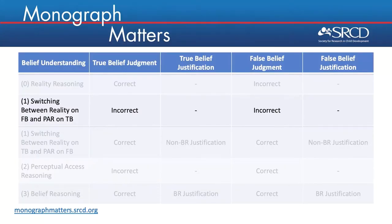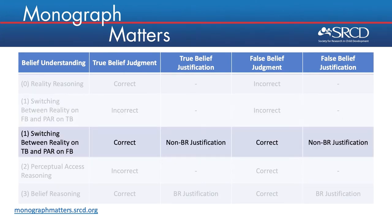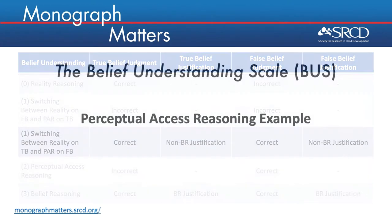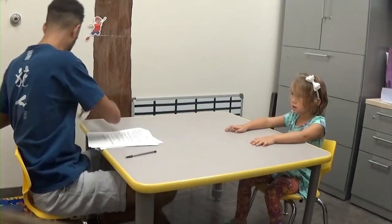As you just saw, the child gave an incorrect answer on both the true belief judgment question and the false belief judgment question. A child can also be categorized in this strategy when giving a correct answer on both judgment questions but failing to give a correct belief justification on both tasks.